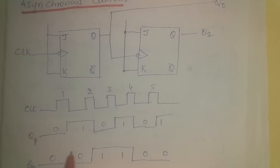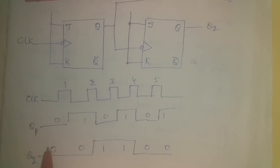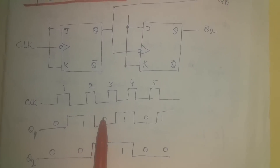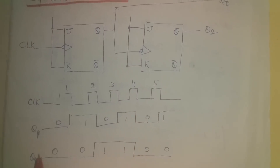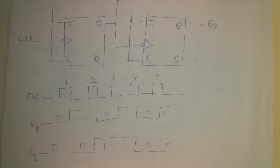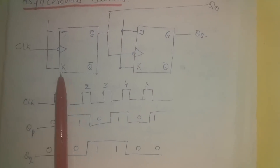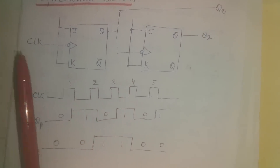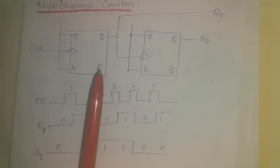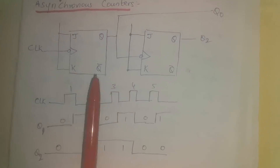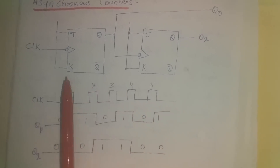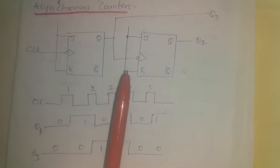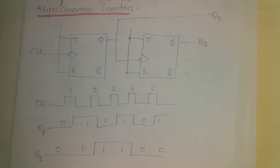At the negative edge of the fourth clock pulse, Q1 undergoes a transition and becomes low; Q2 undergoes a transition and becomes low as well. So the states are: 00, 01, 10, 11 — four different states. This is called a 2-bit counter or mod-4 counter. The number of states is given by 2^n, so 2^n = 4 means n = 2 flip-flops. For 8 states you need 3 flip-flops; for 16 states, 4 flip-flops.